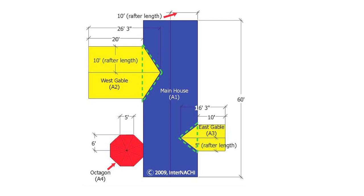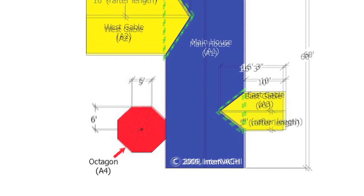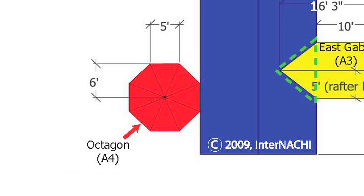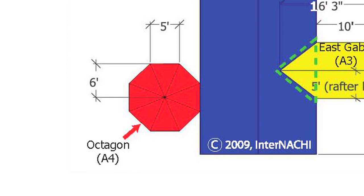Let's start with the red octagon, A4, which is just like a bunch of triangles stuck together. We know that the area of a triangle is base times height times one half, so the octagon is eight of those triangles added together. If the base is five feet and the height is six feet, the area of the octagon is eight times base times height times one half, which equals one hundred twenty square feet.